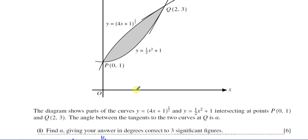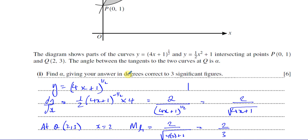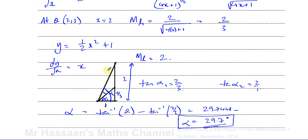To find the angle between two lines when we know their gradients, we take the inverse tan of one gradient and subtract the inverse tan of the other. This works because the tangent of the angle a line makes with the horizontal equals the gradient of the line — opposite over adjacent, i.e. change in y over change in x.